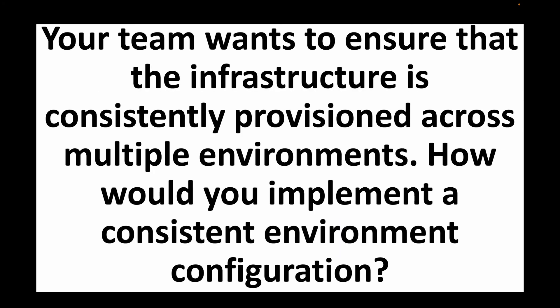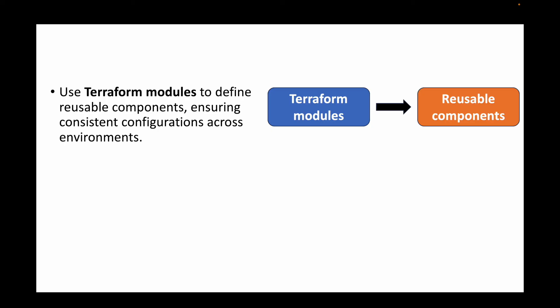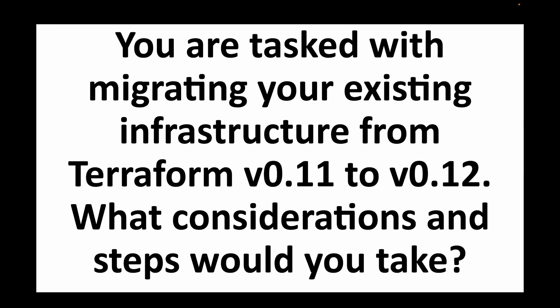The next question is: your team wants to ensure infrastructure is consistently provisioned across multiple environments — how would you implement a consistent environment configuration? Again, we can use Terraform modules to make code reusable. For example, an EC2 instance that needs to be launched in dev, UAT, and prod can use the same module code, with variables changing per environment. The module abstracts complexity and promotes code consistency — the main configuration file stays the same while variable values differ.